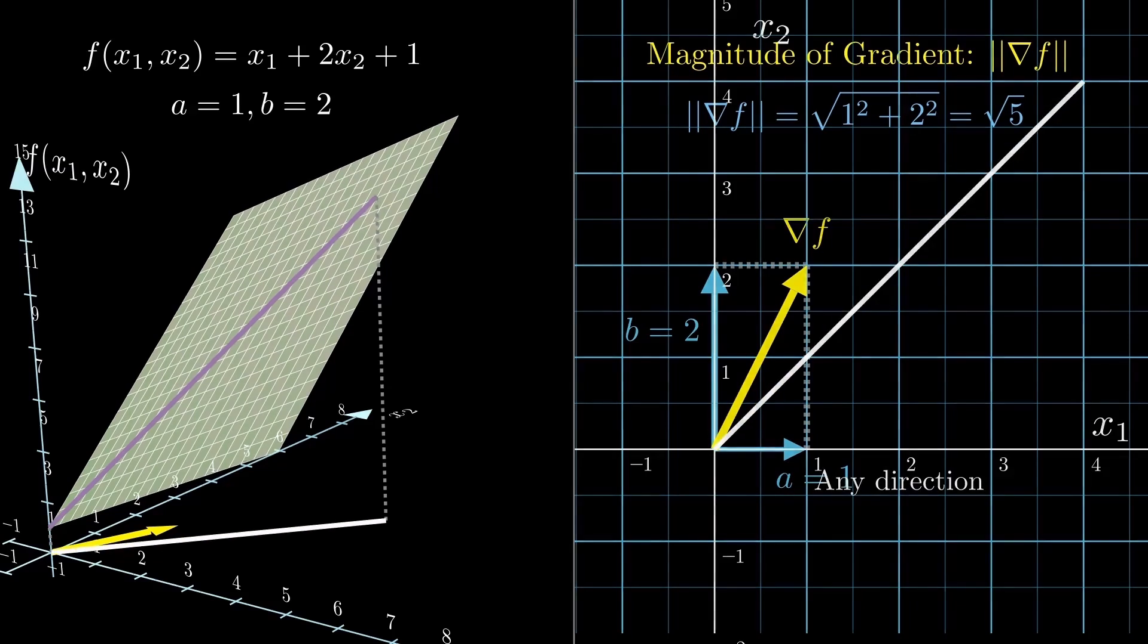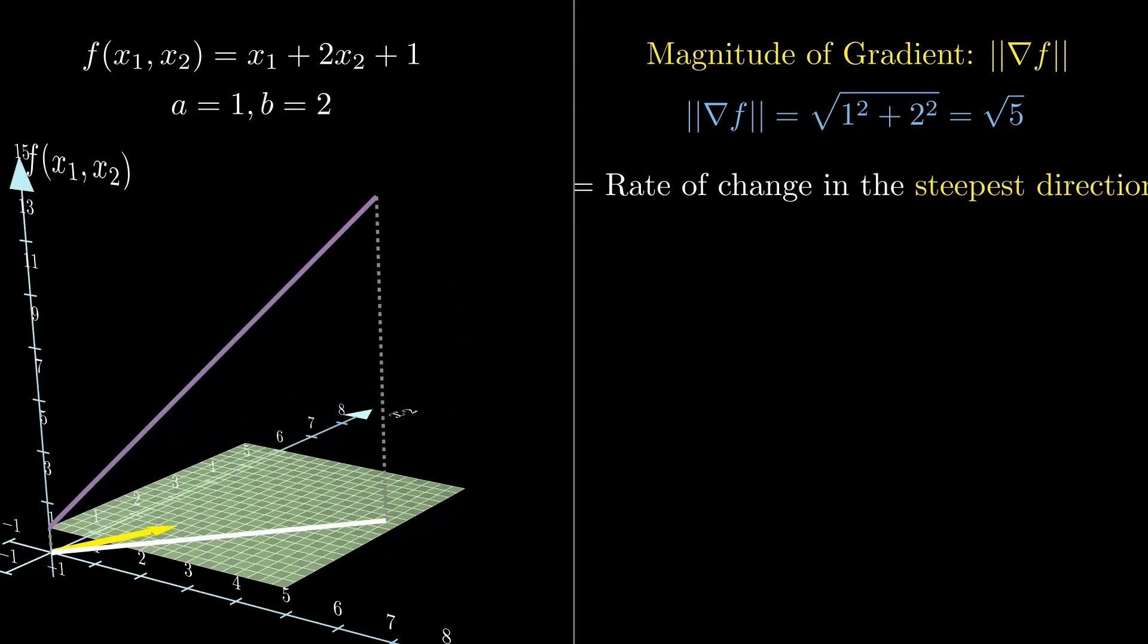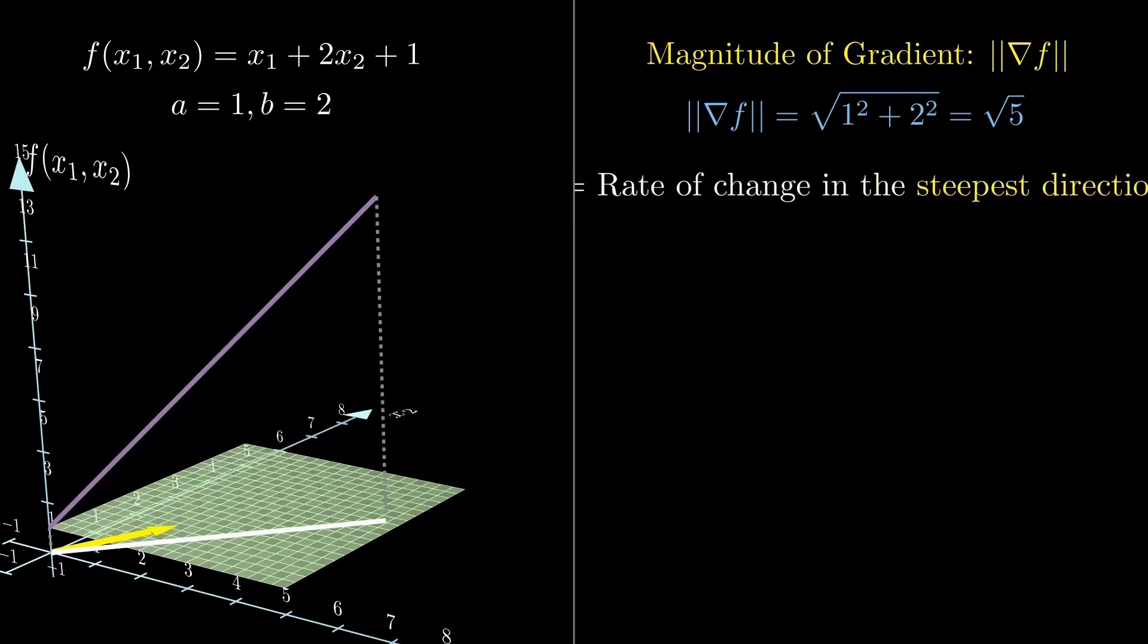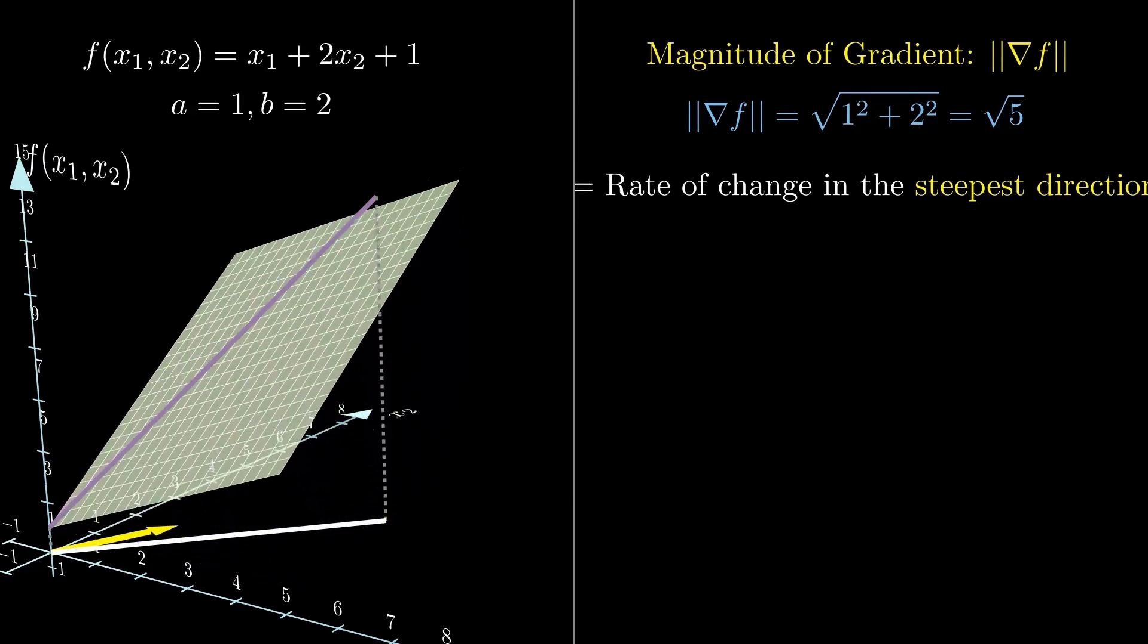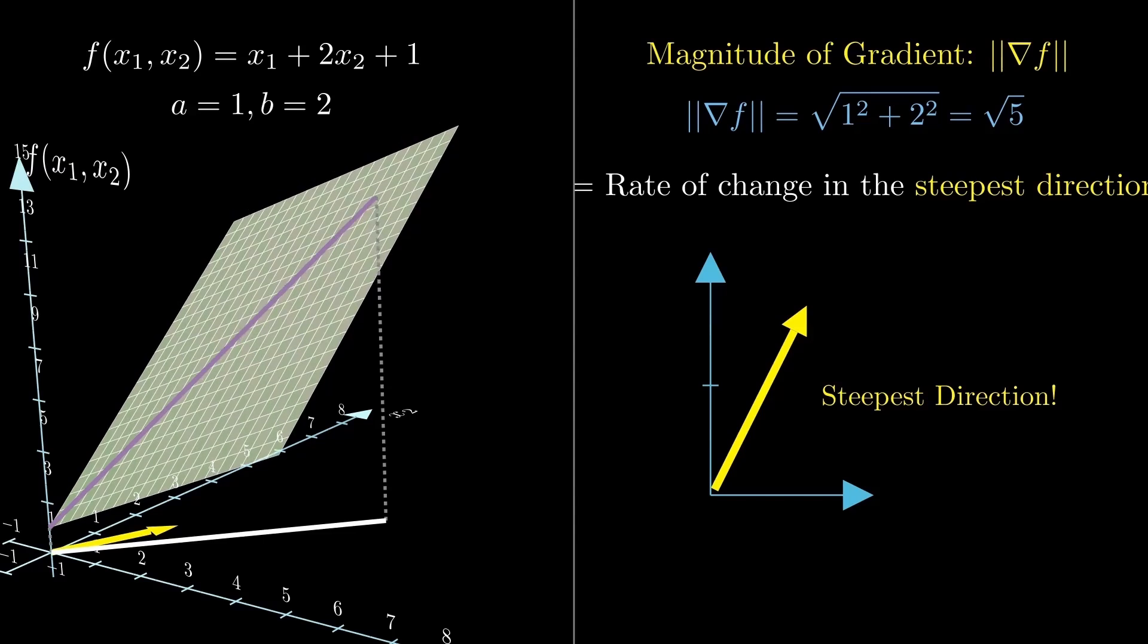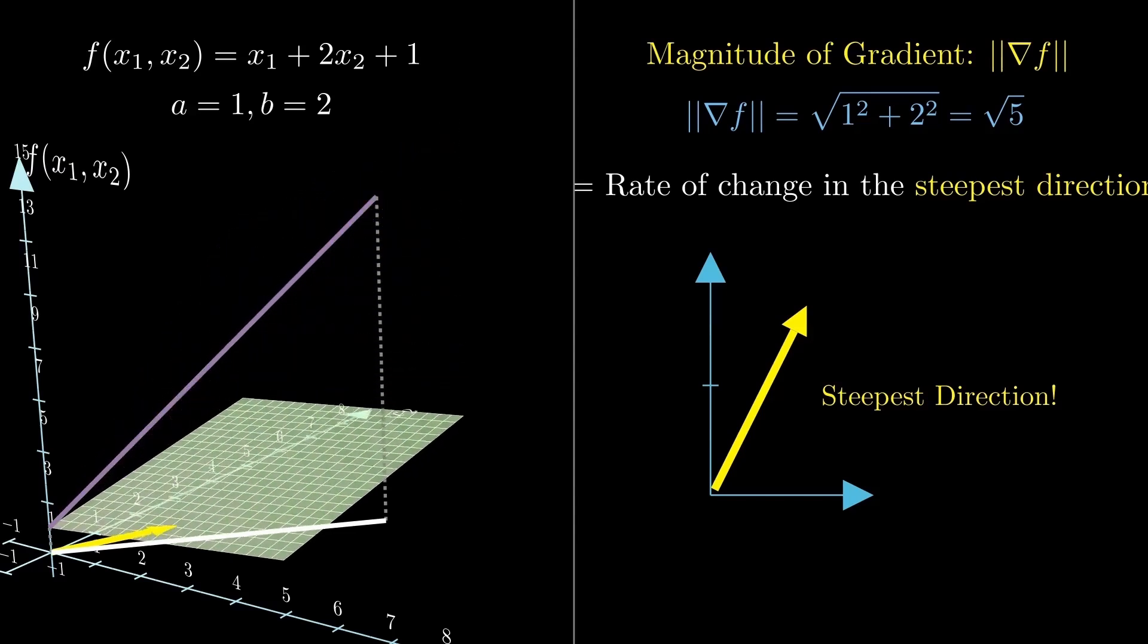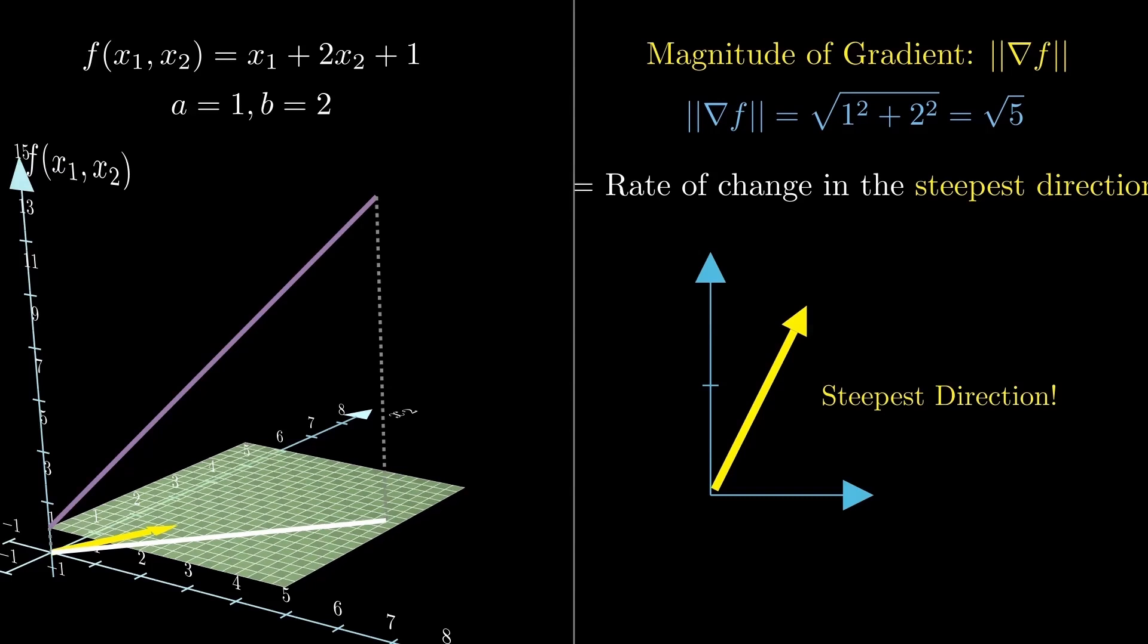Not quite. It doesn't just mean steepness in general—it actually tells us how fast the function value goes up if we move in the gradient direction. So the gradient's magnitude is really the slope in the steepest direction. For example, this purple line here isn't the gradient; it's just one possible slope of the surface.